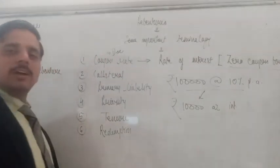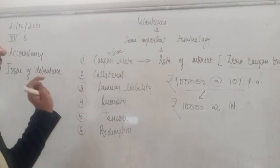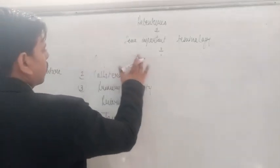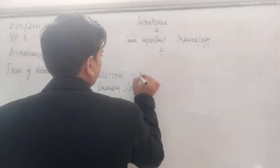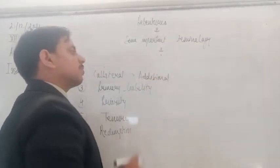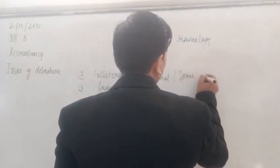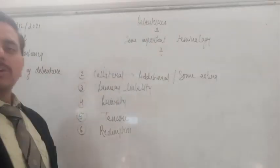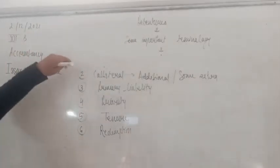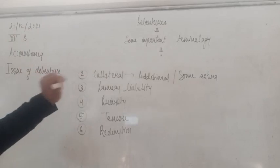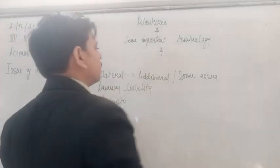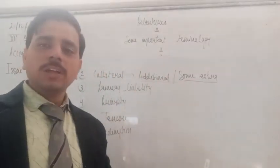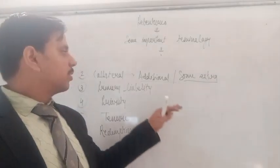So let's deal with another concept — that is collateral. Collateral literally means additional, some extra. When we talk about this terminology in the terms of debenture, we are talking about collateral security. Collateral security means the additional security or some extra security that has been kept by the company to guarantee the payment of the loan taken from the public.